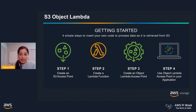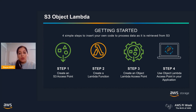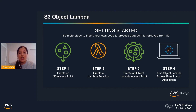To get started with Object Lambda, you need to complete four simple steps. First, create an S3 access point — unique host names you can create to reach S3 buckets, used to enforce distinct permissions and network controls. Second, author a Lambda function that performs the required processing. Third, create a special Object Lambda access point configured with the S3 access point and Lambda function from steps one and two. Lastly, simply use the Object Lambda access point in your application to start invoking Lambda functions with your GET requests.